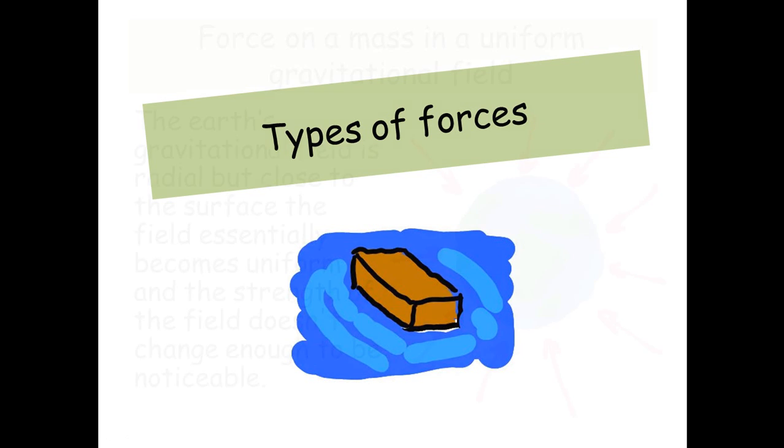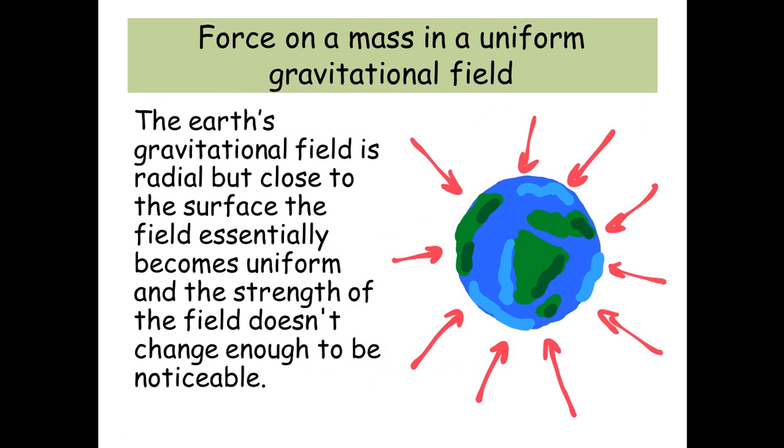Types of Forces. Force on a mass in a uniform gravitational field. The Earth's gravitational field is radial, but close to the surface the field essentially becomes uniform and the strength of the field doesn't change enough to be noticeable.